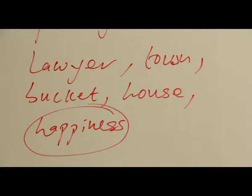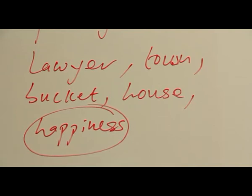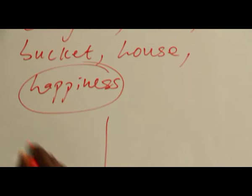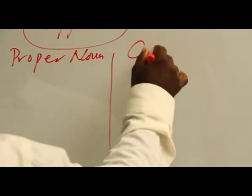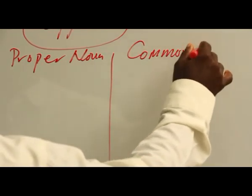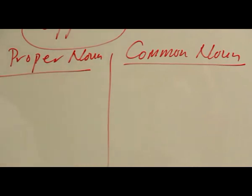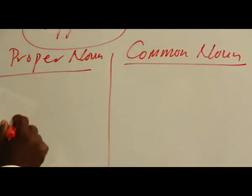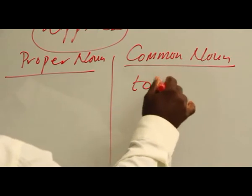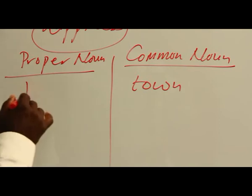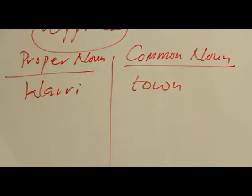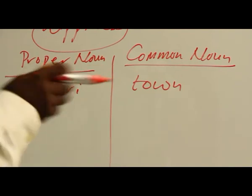Now let us see the difference clearly between the proper noun and the common noun. I said town is a common noun. However, if we take Worri, for example, Worri is a town. But it's proper because it's a specific place. Town is not — it can be any town. So it's common to a number.